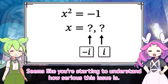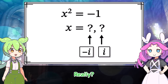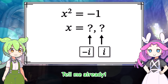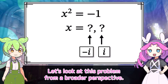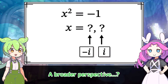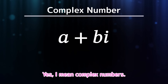Seems like you're starting to understand how serious this issue is. But it's not like there's no way to distinguish between them. Really? Let's look at this problem from a broader perspective — I mean complex numbers.